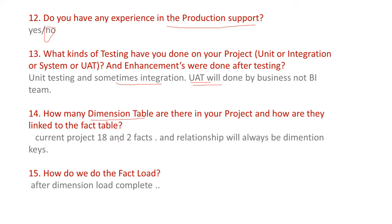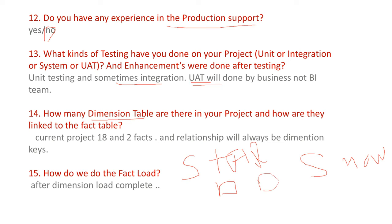How do you do the fact load after dimension load completes? We first load dimension tables, then the fact tables. In star schema, dimension tables surround the central fact table. In snowflake schema, it is similar but dimension tables are further normalized, linking to additional dimension tables.